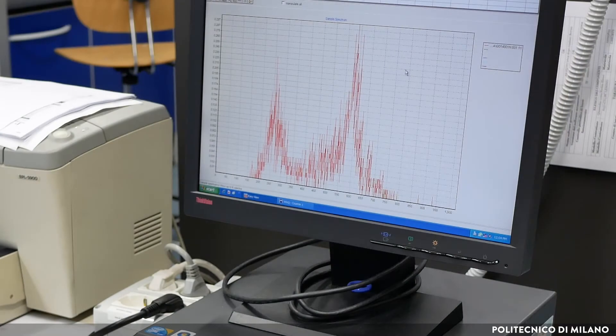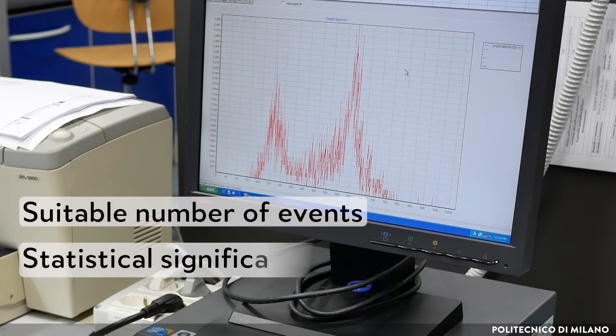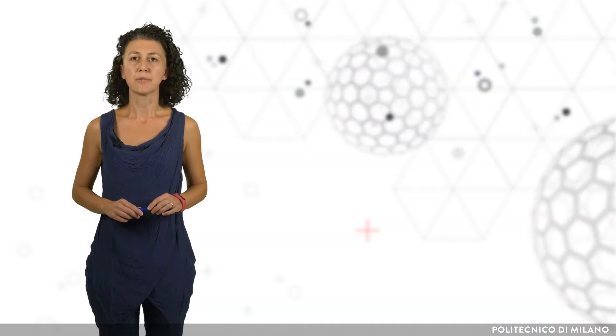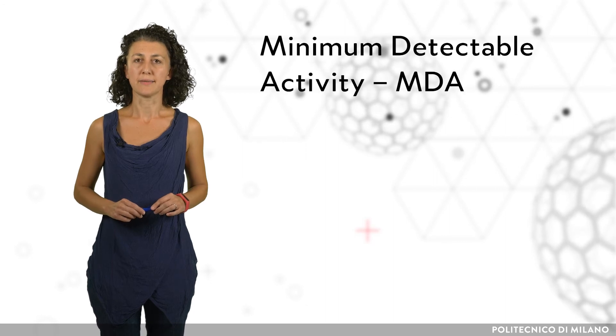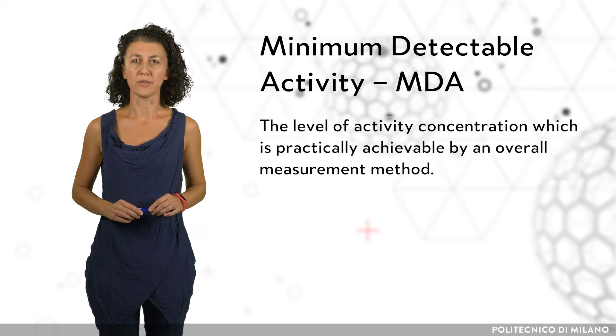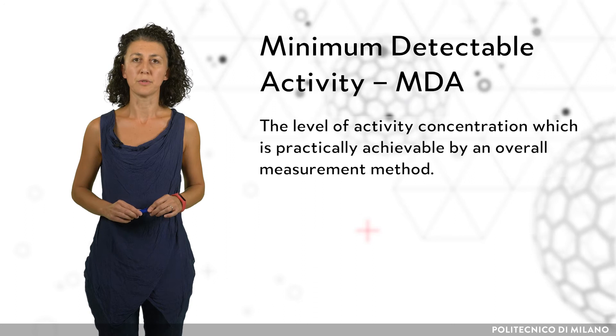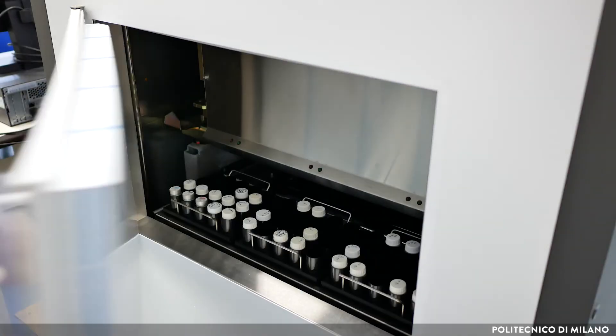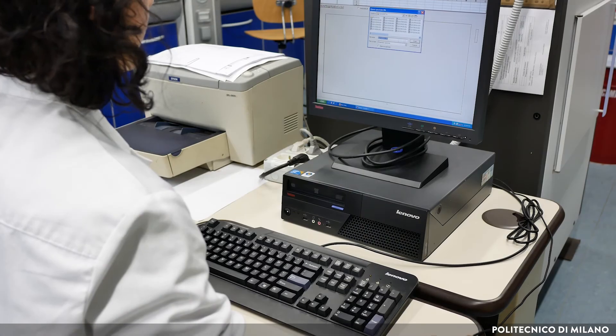Indeed, since the random nature of radioactive decay, it is important to collect a suitable number of events to have a measurement with statistical significance. Furthermore, counting time is enabled to achieve the minimum detectable activity, MDA, that is the level of activity concentration which is practically achievable by an overall measurement method. The vial is loaded in a counter, and after a suitable waiting time, the measurement is acquired.